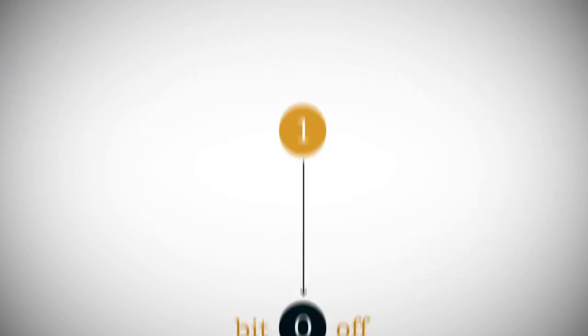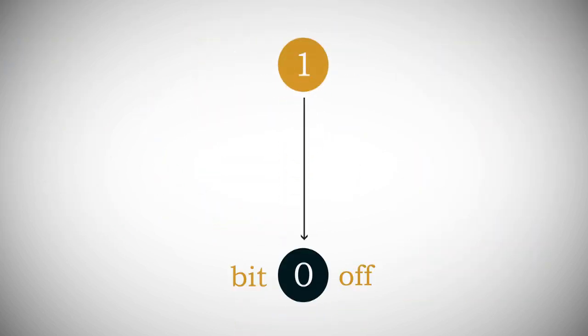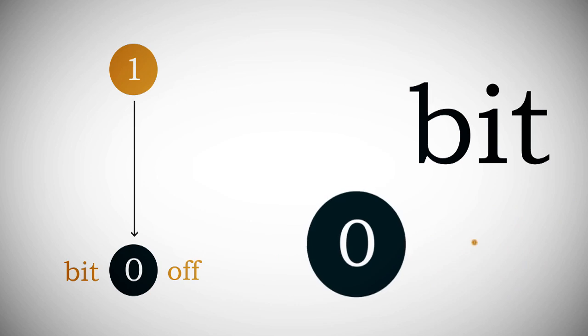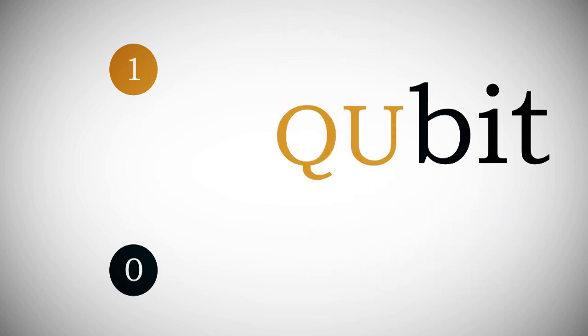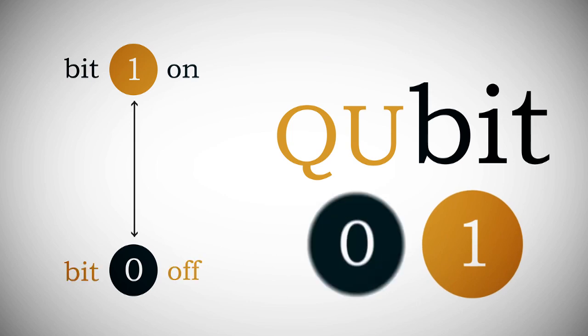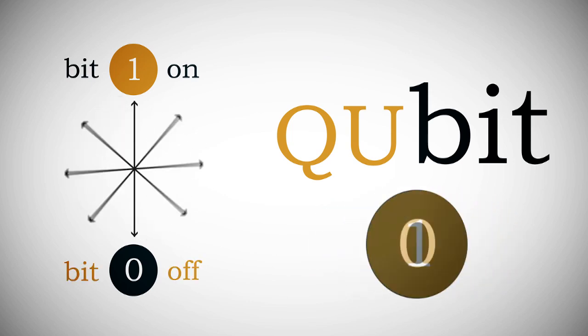Where classical computers process information in the form of ones and zeros, a quantum computer, because it operates according to the laws of quantum physics, can process data as a one or zero, or one and zero at the same time.